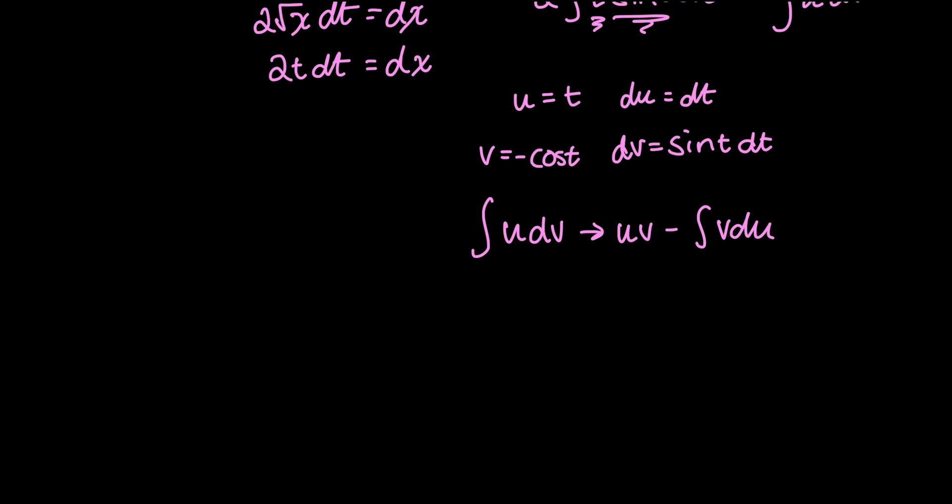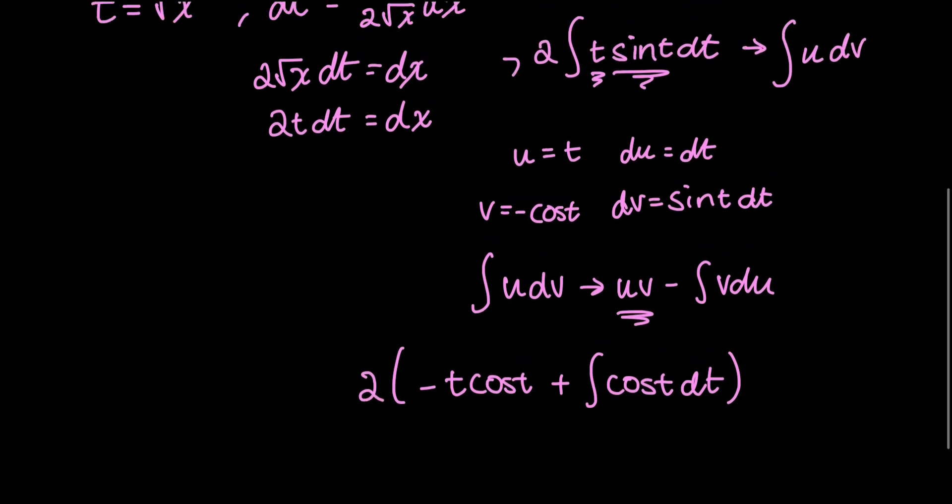With my defined u and dv terms, and v and du, I can plug this in. I have the first part, the uv part, which is t negative cosine t minus the integral of v, which is negative cosine t. I'm going to pull that negative out, so it becomes plus cosine t dt. And this whole thing is multiplied by 2. Let me not forget that constant that is pulled out.